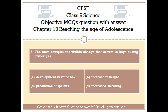Question number 5. The most conspicuous visible change that occurs in boys during puberty is: Option A development in voice box. Option B increase in height. Option C production of sperms. Option D increased sweating.